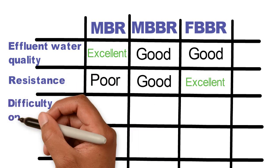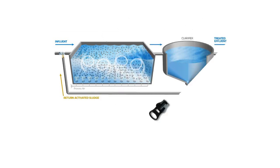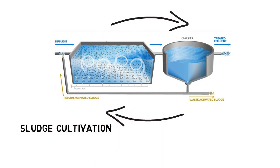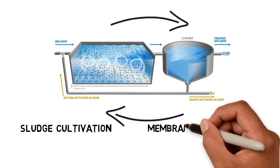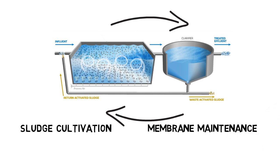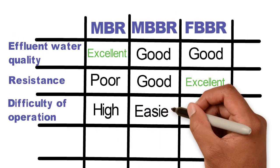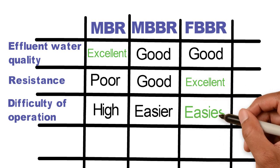Difficulty level of operation. MBRs require monitoring of the activated sludge process as well as back washing of the membranes in certain intervals. Therefore their operation can be challenging and higher qualifications are necessary. MBBRs and FBBRs are more forgiving and especially FBBRs are easy to operate.